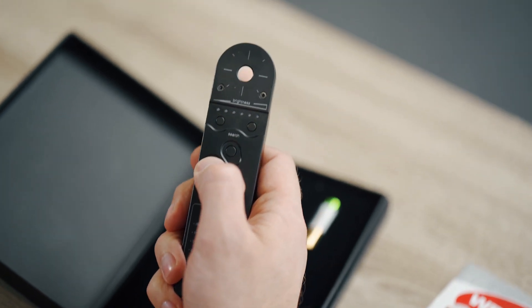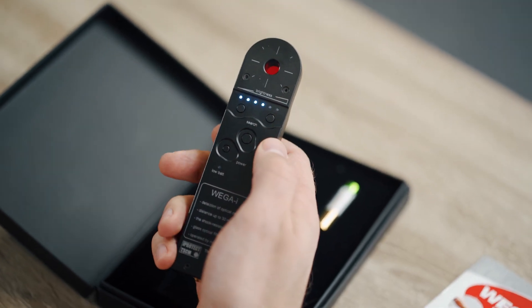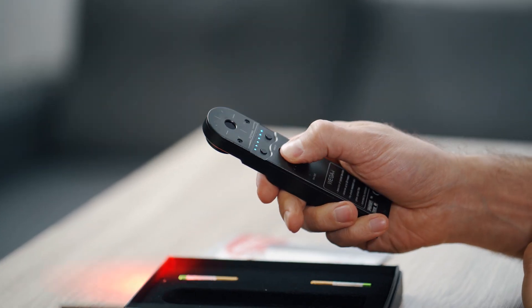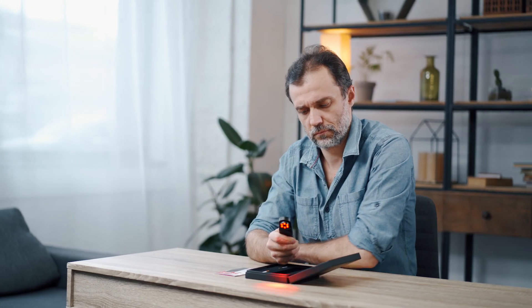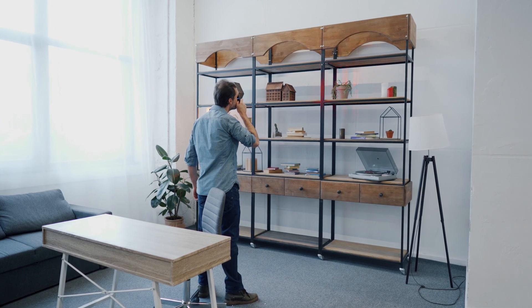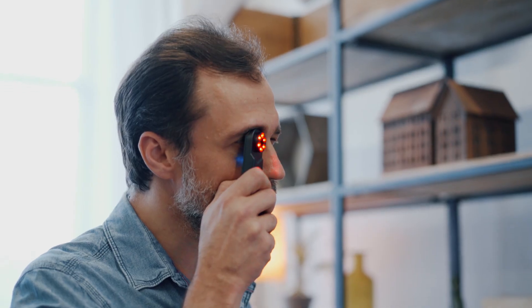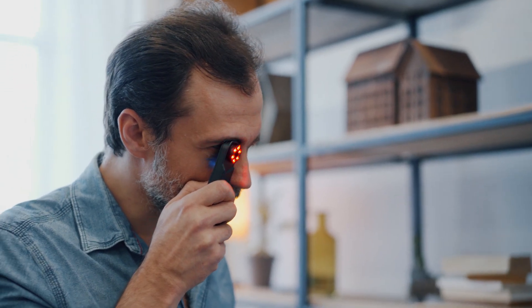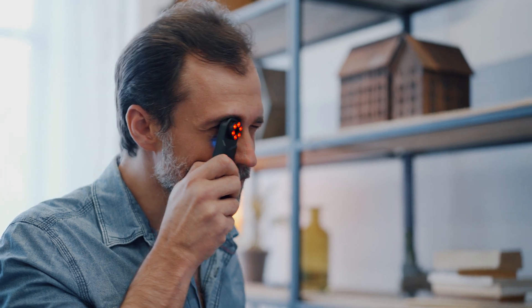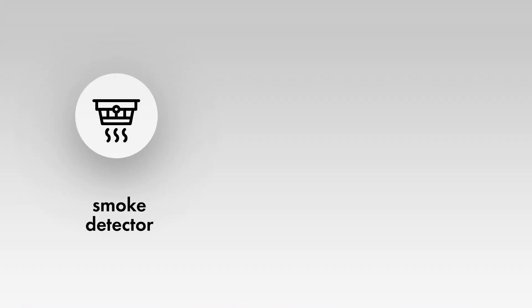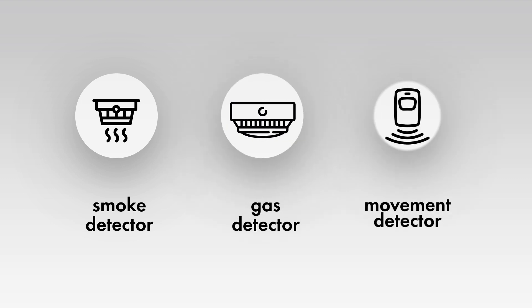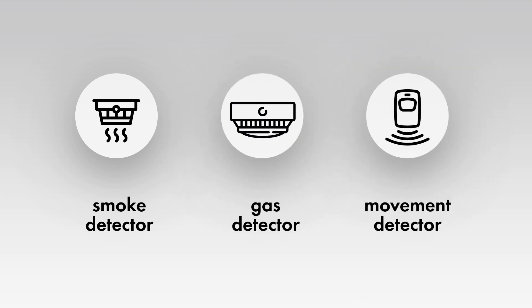Turn on the WEGA Eye by pressing the power button. Enter the operation mode by pressing and holding the search button. Scan all probable places where a hidden video camera could be installed. These are usually places in the upper part of the room, especially under the ceiling. Pay attention to ceiling tiles, smoke, gas, and movement detectors, and any other devices located on the ceiling.